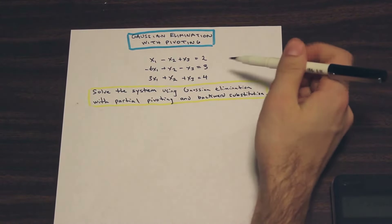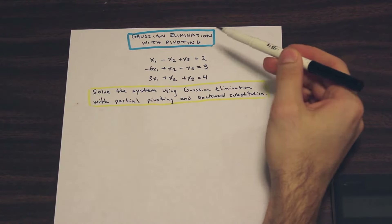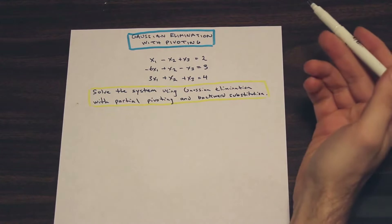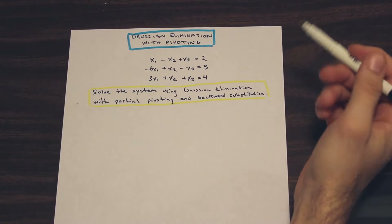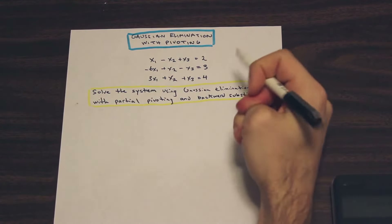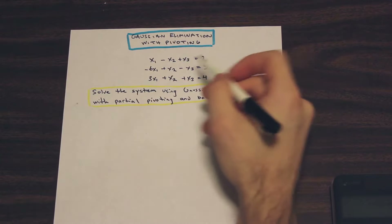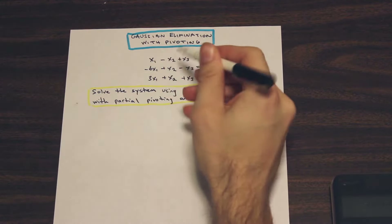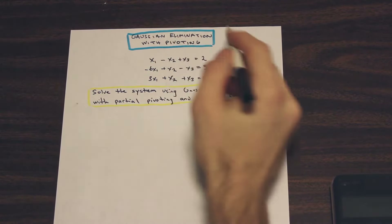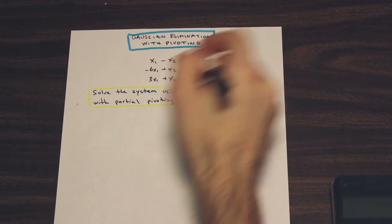We have a system of three equations, and we're asked to solve the system using Gaussian elimination with partial pivoting and backward substitution. The first step in this kind of problem is to rewrite the matrix with just the coefficients and the right side of the equations.